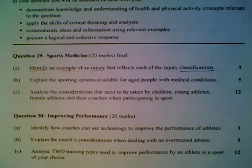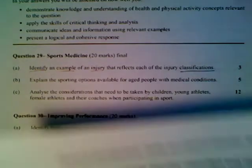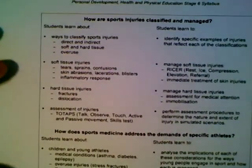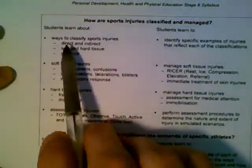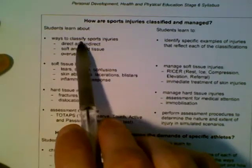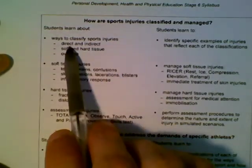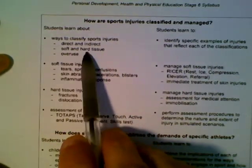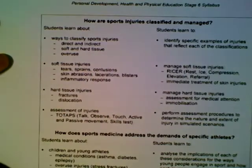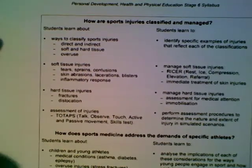Looking at the syllabus to see where this question comes from, we'd be looking at the first dot point for sports medicine: ways to classify sports injuries — direct, indirect, soft tissue, hard tissue, and overuse injuries. Those are the five classifications that need to be included in your answer.